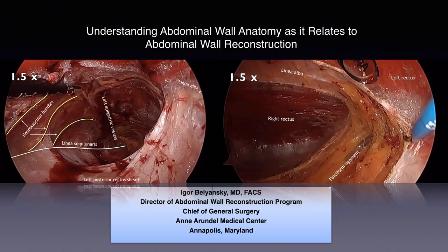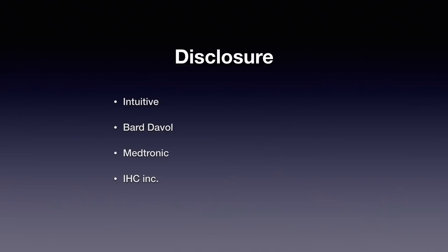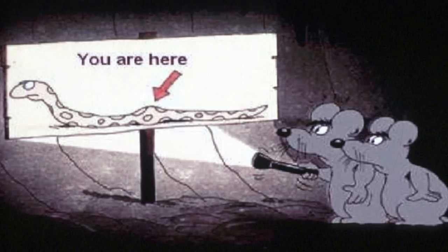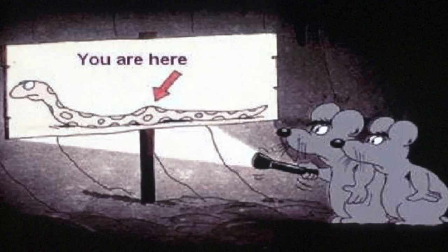Hello, this is a presentation titled 'Understanding Abdominal Wall Anatomy as it Relates to Abdominal Wall Reconstruction.' I decided to make this presentation because there is significantly more interest in retromuscular dissection, which includes the Rives-Stoppa repairs as well as transversus abdominis release. Those who do these procedures can find the retromuscular anatomy quite confusing, and perhaps the most important thing between success and failure is truly understanding the anatomy and the relationship of structures in the space.